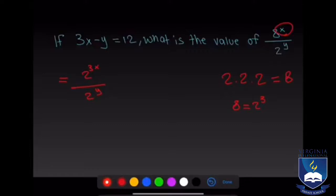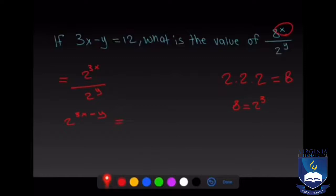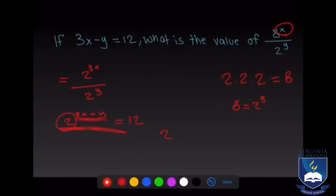Now we simplify. Since this is division, we subtract the exponents: 2 to the power of 3x minus y. We know from the problem that 3x minus y equals 12, so the expression equals 2 to the power of 12. That is the answer.